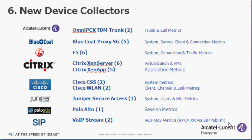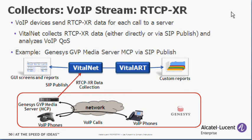Additional new device collectors include Cisco, Juniper, Palo Alto, and others. The VoIP Stream Collector was added to collect and analyze voice over IP quality of service from any device that supports RTCP-XR protocol. The RTCP-XR data can be collected either directly or via SIP publish mechanism.